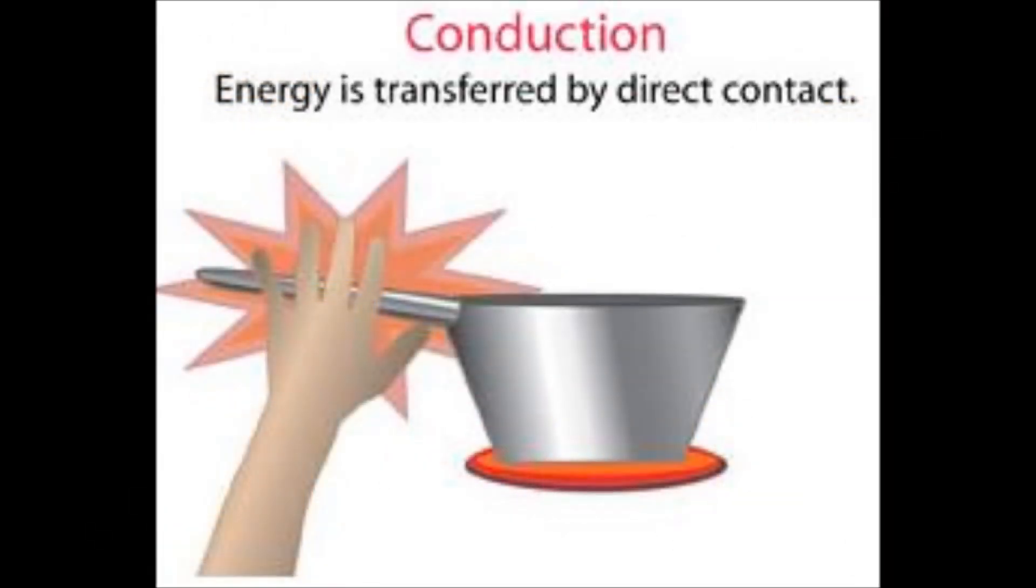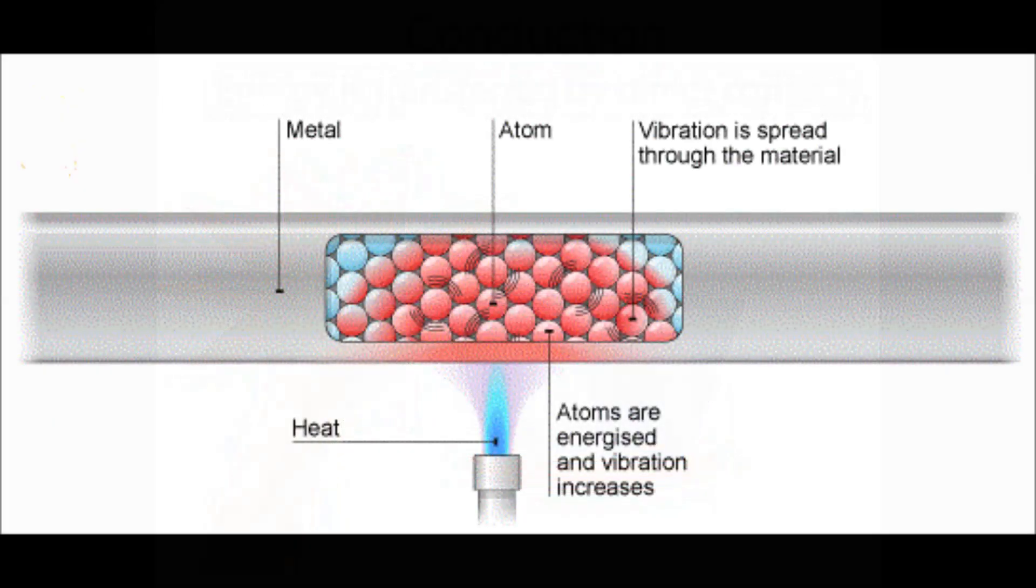On to conduction. It is the transfer of heat between substances that are in direct contact with each other. The better the conductor, the more rapidly heat will be transferred. Metal is a good conductor of heat.